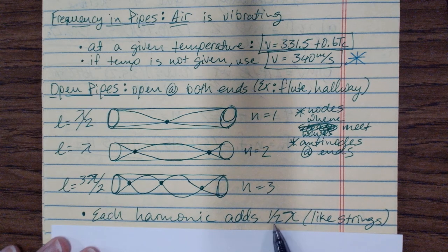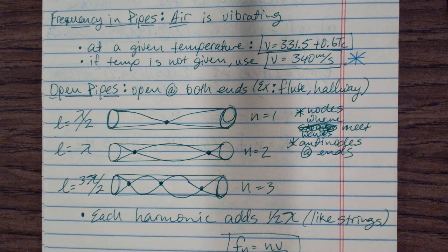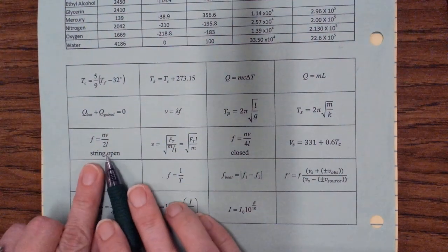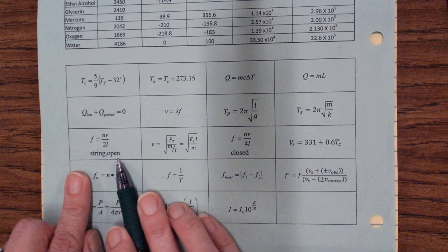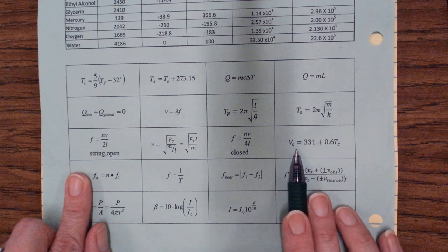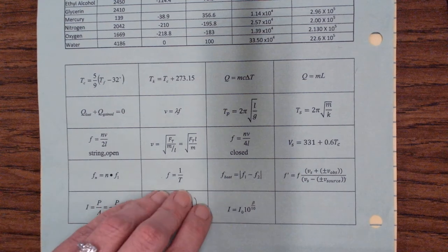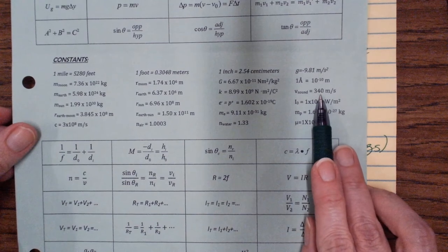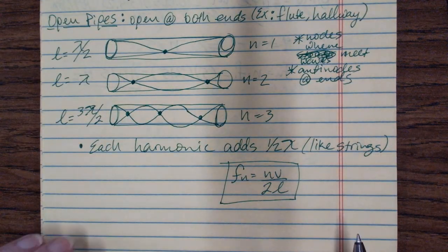For each harmonic of an open pipe, you're adding half a wavelength — just like strings. So open pipes and strings follow the same math. The formula for frequency is the same as for strings: f = nv/2L. On your formula sheet it is labeled for strings and open pipes. Note there's a separate string-tension equation — don't use that for pipes. Use v = 340 m/s for the speed of sound.